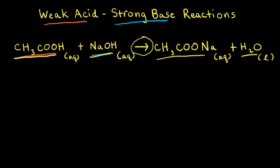Next, let's write the overall ionic equation — this is also called the complete ionic equation. Let's start with acetic acid. Acetic acid is a weak acid that only partly ionizes in solution. Therefore, in an aqueous solution of acetic acid, most of the acetic acid molecules stay protonated and don't turn into acetate. Therefore, we're just going to write CH3COOH. We're not going to show acetic acid ionizing into H+ and the conjugate base.